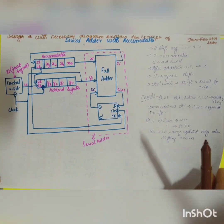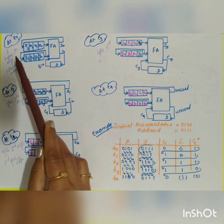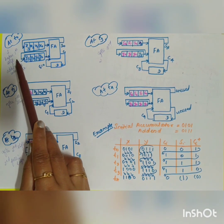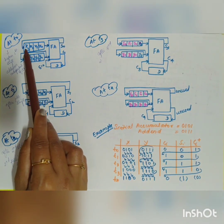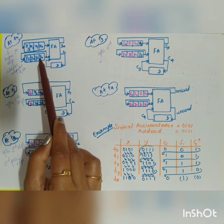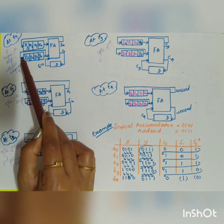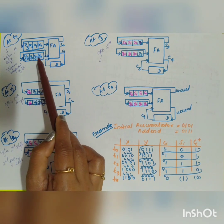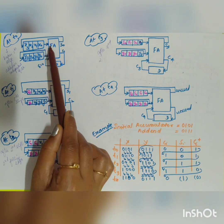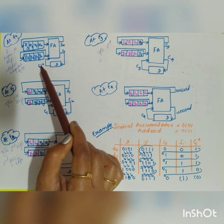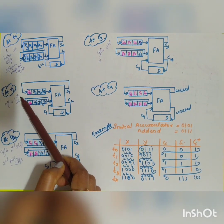Now let us see the four instances of operation of the serial adder with accumulator. At time period T-naught — before the first shift — the data X3 X2 X1 X-naught and Y3 Y2 Y1 Y-naught are stored. The Y register is a cyclic register, so after one shift, Y-naught shifts to the position of Y3 and Y3 shifts to Y2, and so on. At T-naught, before the first shift, the addition of X-naught and Y-naught occurs with initial carry C-naught equal to zero.